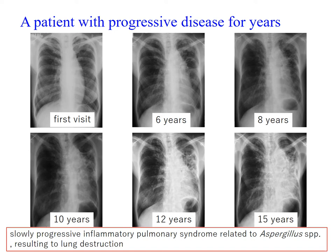This is an example of a patient who showed progressive disease for years. During the follow-up period, frequent exacerbations had occurred and interventions with antifungals had been done. After several years, sadly, we lost the patient with respiratory failure. We recognize CPA as a slowly progressive inflammatory syndrome related to aspergillus infection.